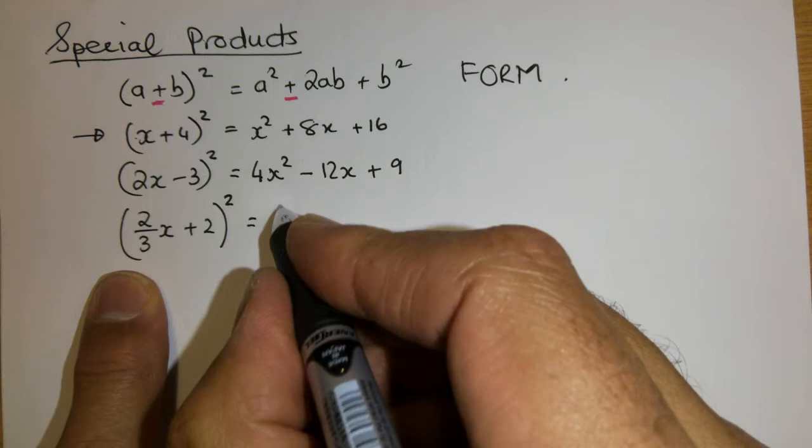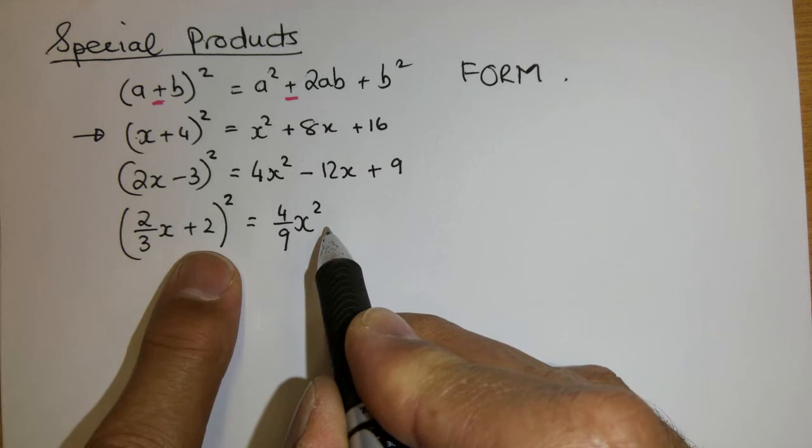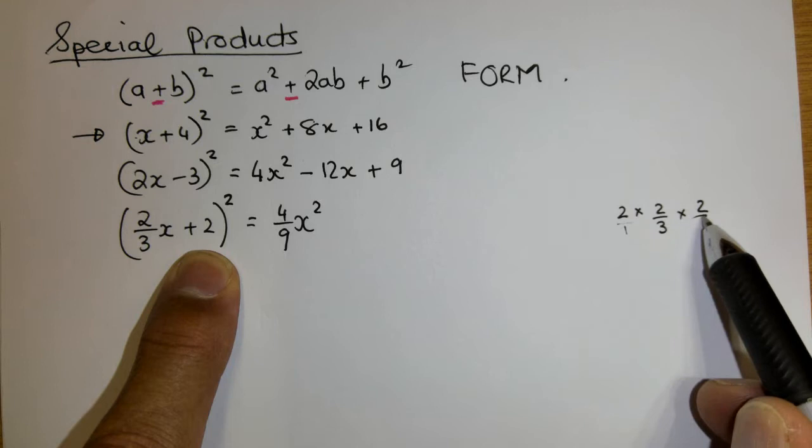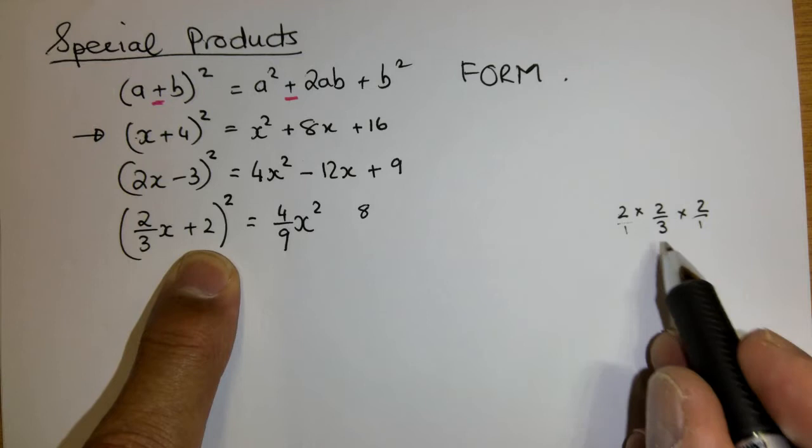It's the first one squared so 4 over 9x squared is x squared. The middle term, careful, I'm going to write it out for you here. It's 2 multiplied by 2 over 3 multiplied by another 2. So remember this can be seen as 2 over 1, 2 over 1. So 2 times 2 times 2 is 8 divided by 3 times 1 times 1 is 3.